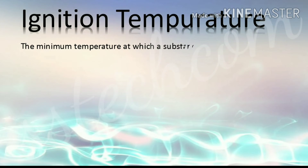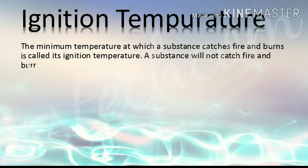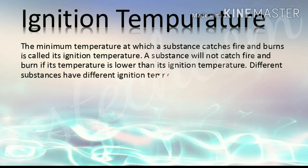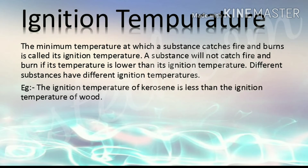Ignition Temperature: The minimum temperature at which a substance catches fire and burns is called its ignition temperature. A substance will not catch fire and burn if its temperature is lower than its ignition temperature. Different substances have different ignition temperatures. For example, the ignition temperature of kerosene is less than the ignition temperature of wood.